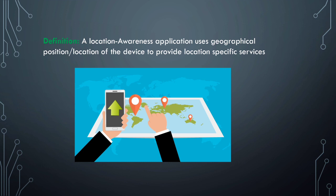For example, when you use Google Maps, it shows your current location by default and helps you explore your nearby locality — like restaurants, petrol stations, hospitals, grocery stores, and even parking lots if you are new in a city and looking for parking. This is how location-aware applications work. Application developers are increasingly using location services to tailor the user experience and provide more relevant content.